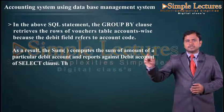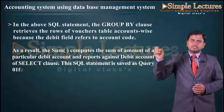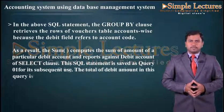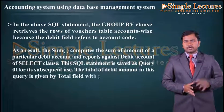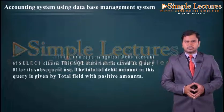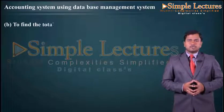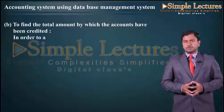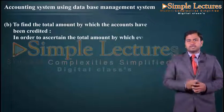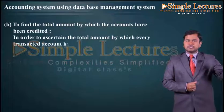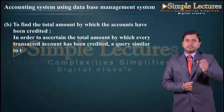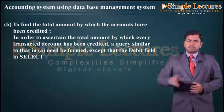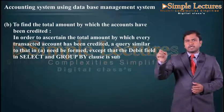This SQL statement is saved as Query 01 for subsequent use. The total of debit amount in this query is given by the total field with positive amounts. To find out the total amount by which accounts have been credited, a query similar to Query 01 needs to be formed, except that the debit field in the SELECT and GROUP BY clause is substituted by the credit field.